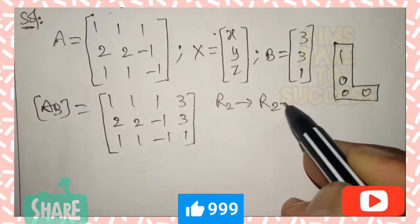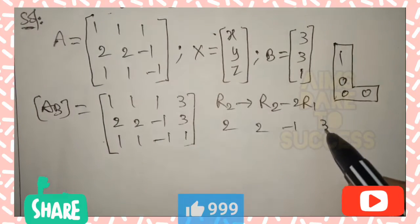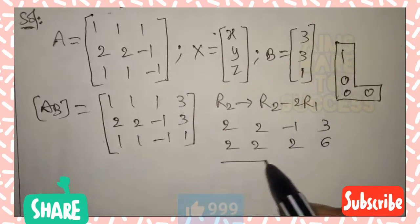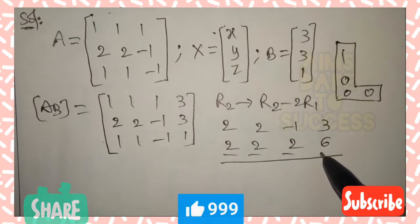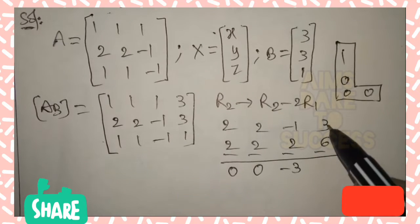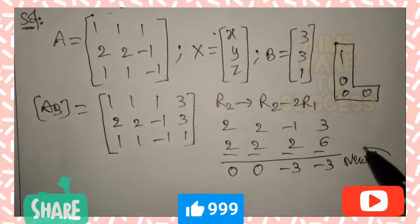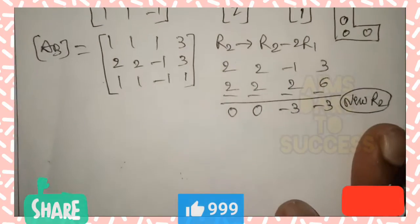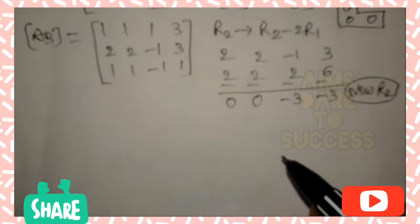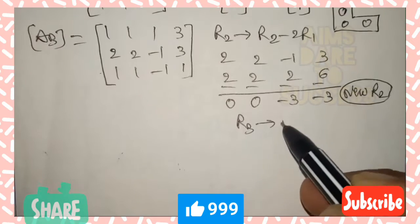For the first column, row 1 element is already 1. For row 2, we need to make the first element 0 using row 1. Apply R2 → R2 - 2R1: 2 - 2(1) = 0, 2 - 2(1) = 0, -1 - 2(1) = -3, and 3 - 2(3) = -3. So new R2 is 0, 0, -3, -3.